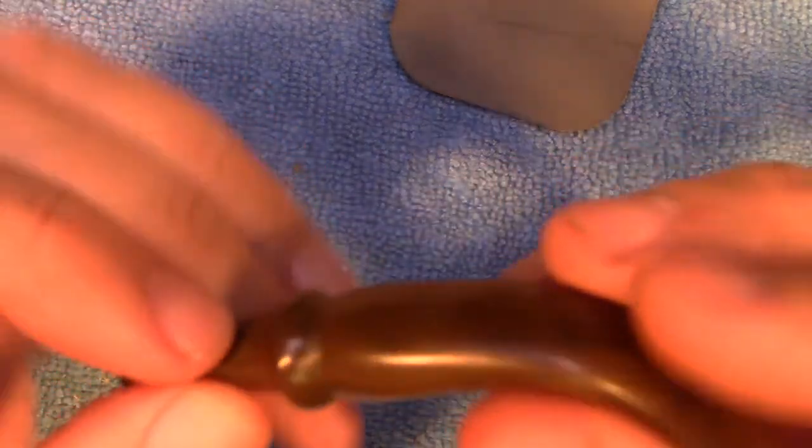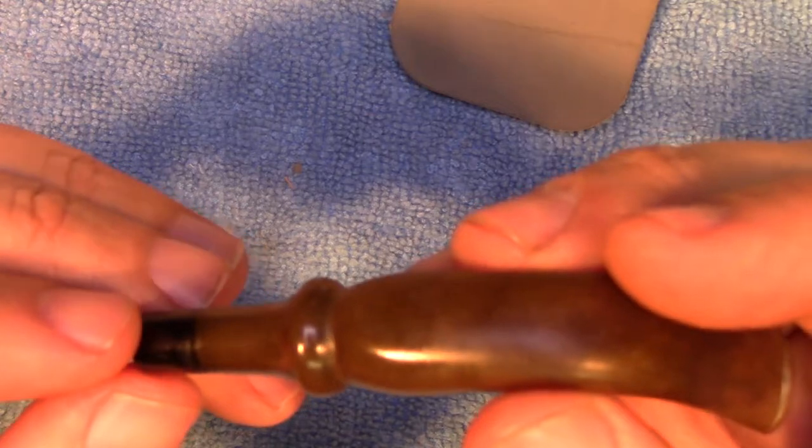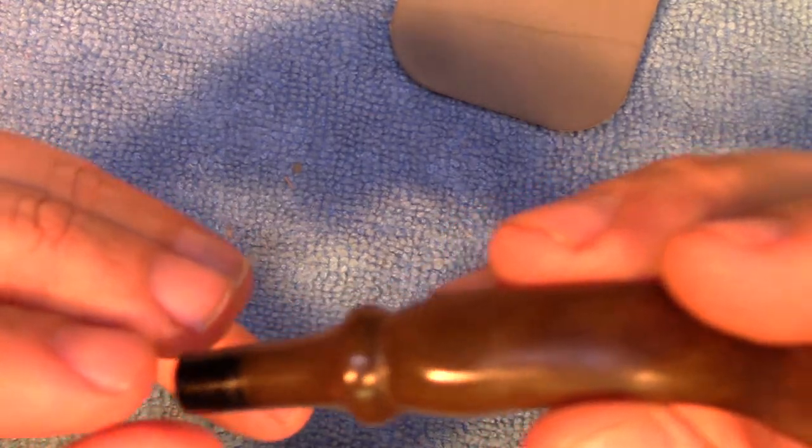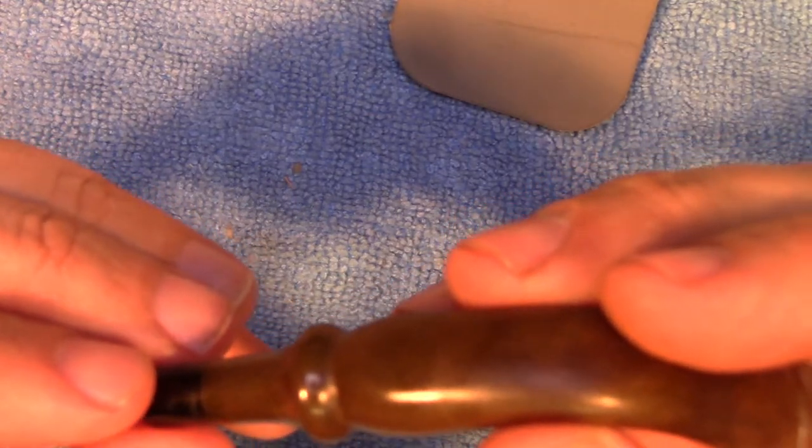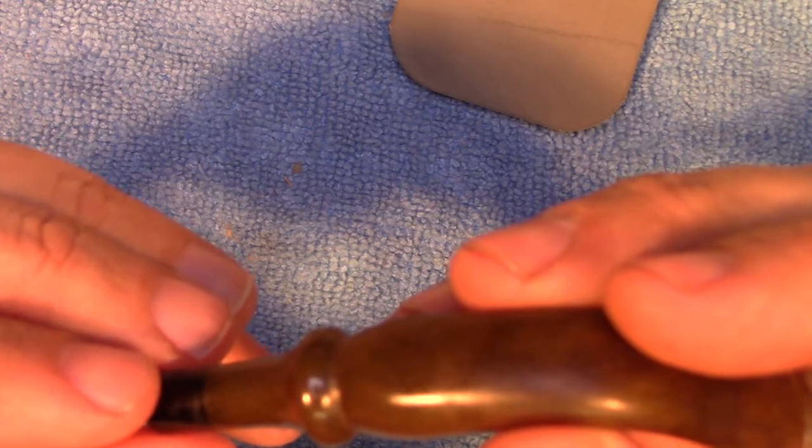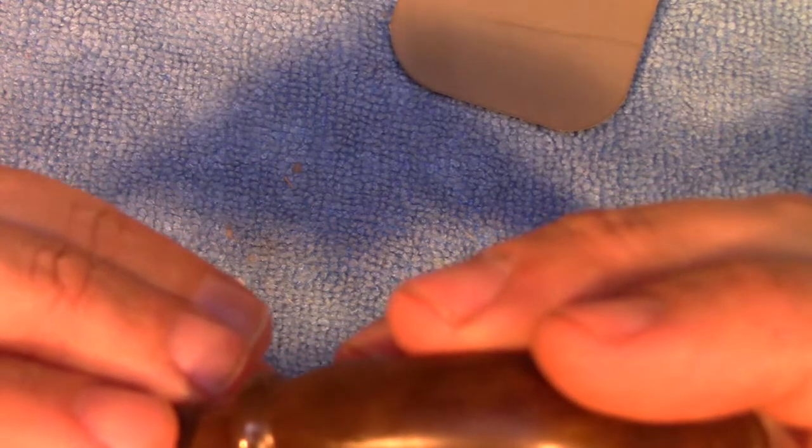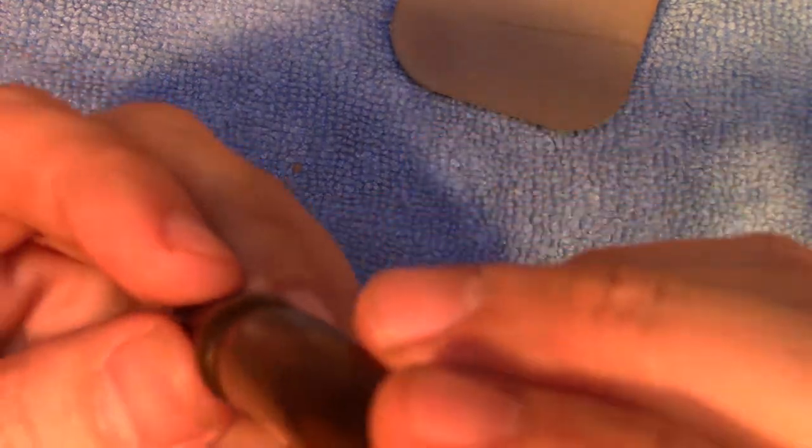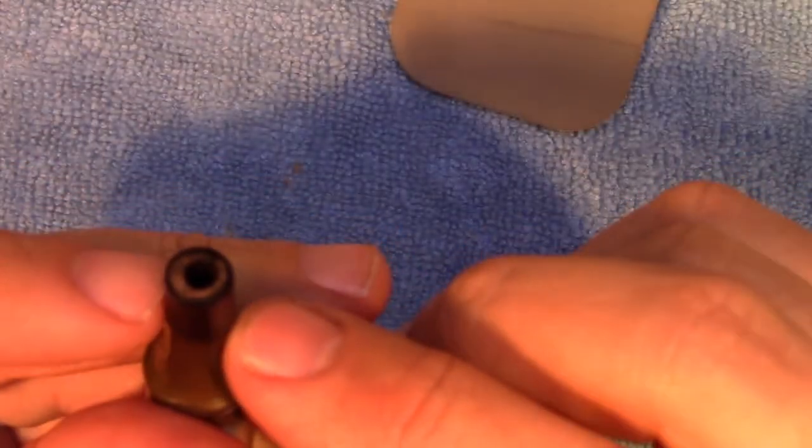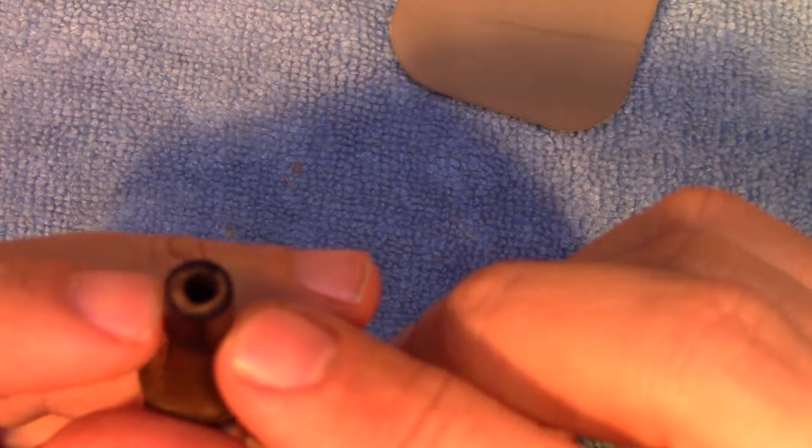You can see there is no oxidation here where this actually fit into its respective mortise. Now this pipe is off of a calabash that has essentially a military mount, so this is going to friction fit into that mount.